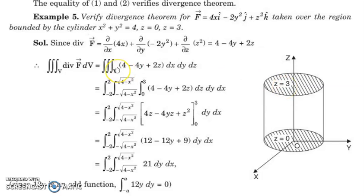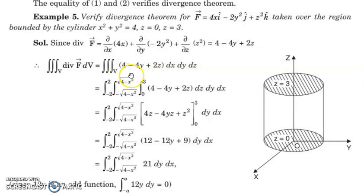First we will find the triple integral — the volume integral, that is triple integral of divergence of f dv. The divergence is: derivative with respect to x of the first component gives 4, derivative with respect to y of the second component gives minus 4y, and the third component gives 2z. So that is triple integral of 4 minus 4y plus 2z dx dy dz, where z varies from 0 to 3 and x, y vary over the circular region.